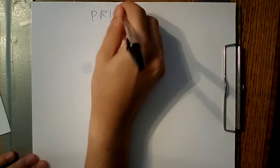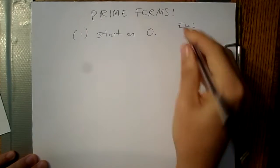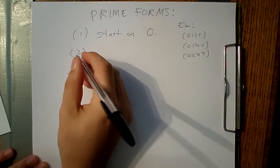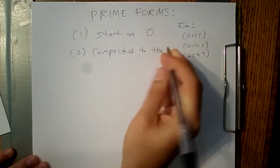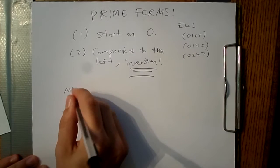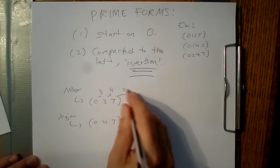Now, how is prime form different? There are two important ways. One, a prime form always starts on zero. Number two, a prime form is not only compacted the most from the first pitch class to the last pitch class, like a normal order, but it is also compacted the most to the left. This takes inversion into account.